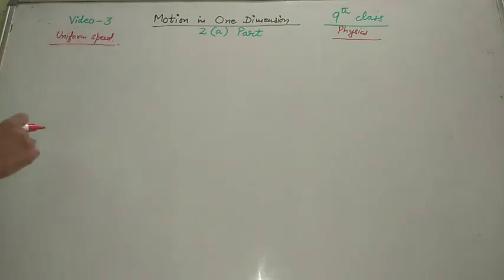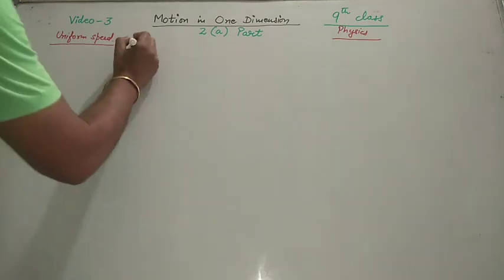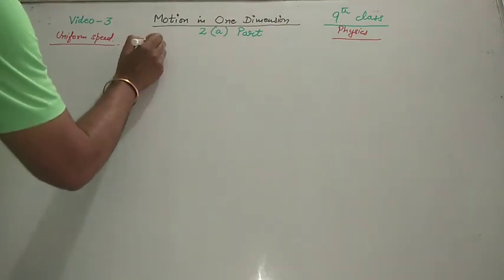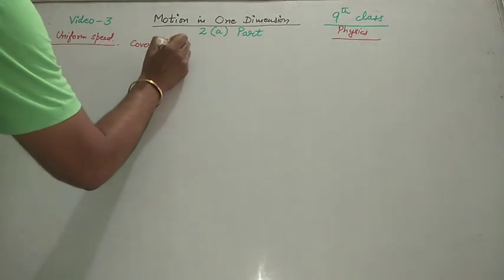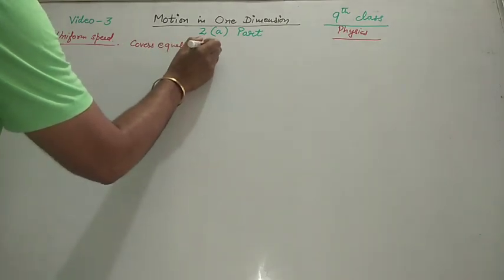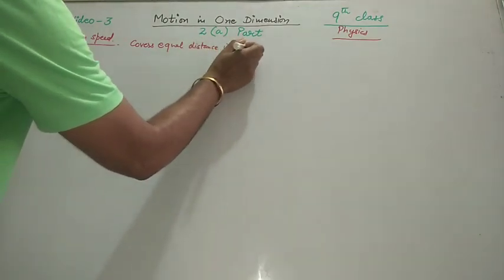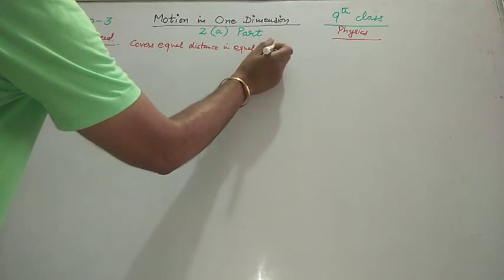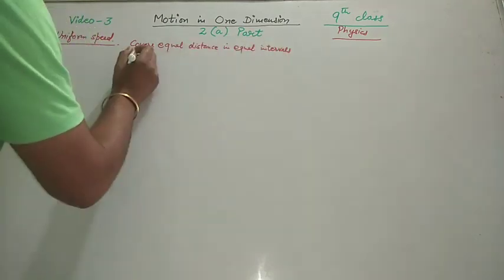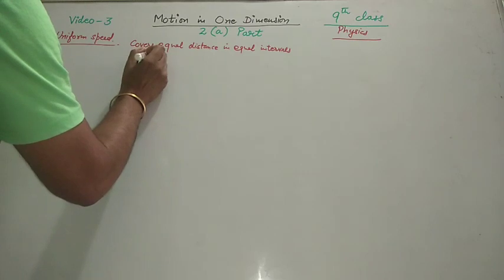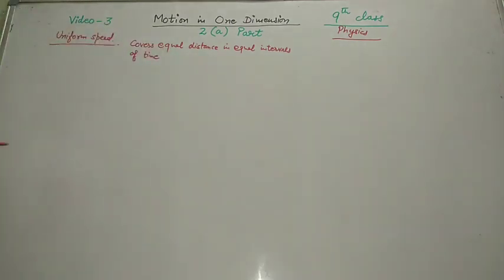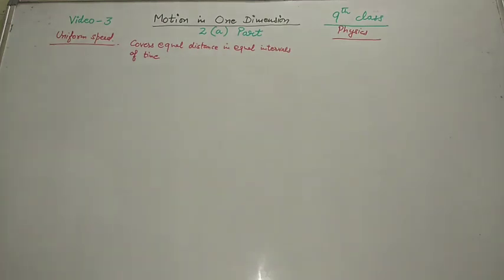Uniform Speed: a body is said to be moving with uniform speed when it covers equal distance in equal intervals of time. An example is the motion of a ball on a frictionless surface.